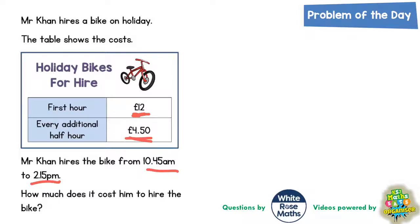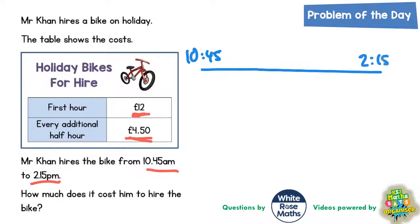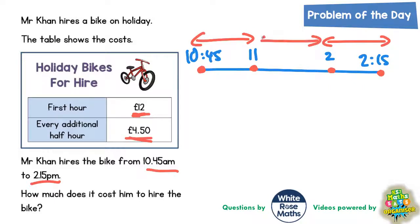The first thing we could do is figure out how long he's actually hired the bike for. One way of doing this would be to do a timeline. Draw a timeline, put 10.45am at the start and 2.15pm at the end. Then we round 10.45am up to the next hour, which would be 11 o'clock, and round 2.15pm down to the previous hour, which would be 2 o'clock. We split this timeline into three sections, and 10.45am till 11.00am is obviously 15 minutes.